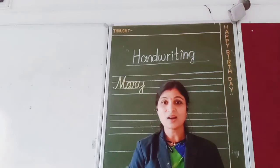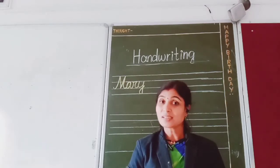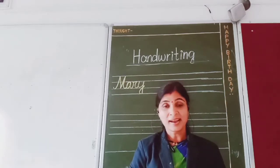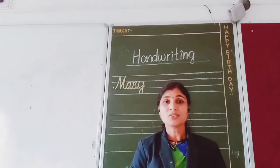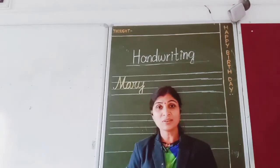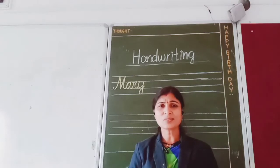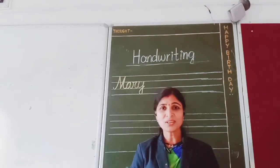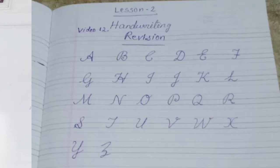So children, in last class you have already learned about the alphabets — how to write the capital cursive letter and the cursive small letter also. Today we are going to do revision first. Pause the video and write the A to Z again.